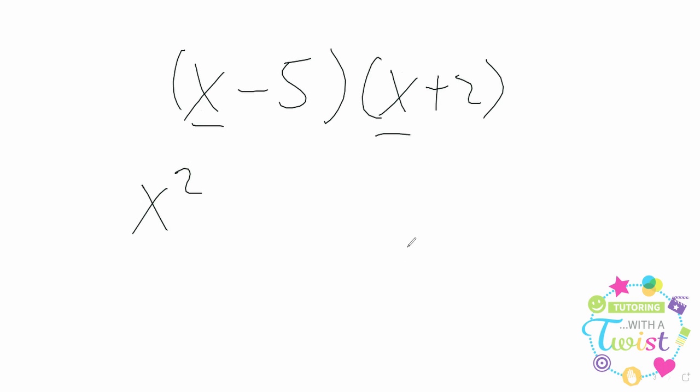Now, what's the last? Well, that's going to be these two constant terms multiplied together. So you can go ahead and know immediately that you're going to end up with a negative 10, because that's negative 5 times 2. In the middle, you're going to have the insides and the outsides added together, so minus 5x plus 2x.